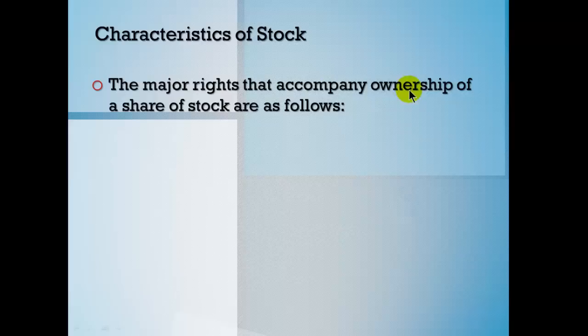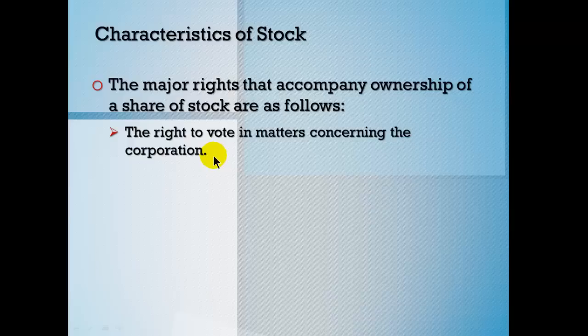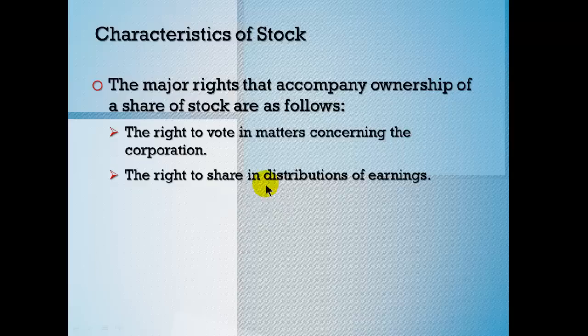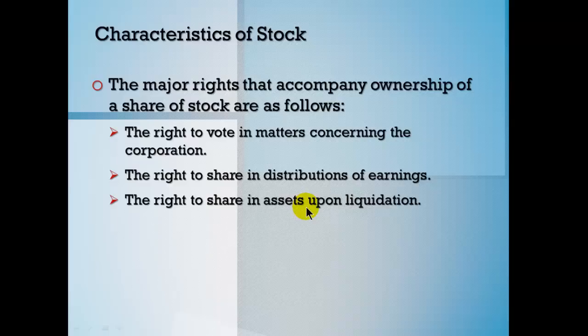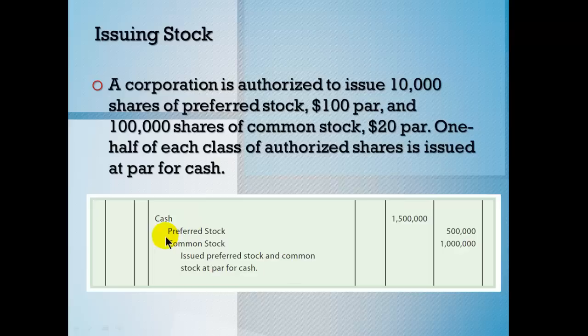The major rights of company ownership are: the right to vote in matters concerning the corporation — most people don't physically attend meetings but fill out a proxy form; the right to share in distributions of earnings, which we'll cover when discussing dividends declared by the board of directors; and the right to share in assets upon liquidation. Don't hold your breath on that last one — there are very few instances where money is actually left over, unless a company is purchased and distributes proceeds to shareholders.